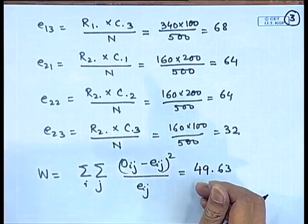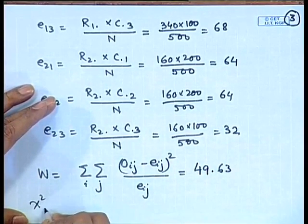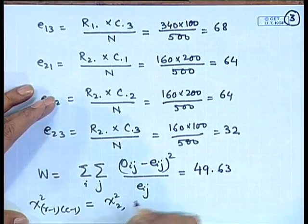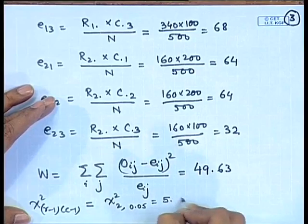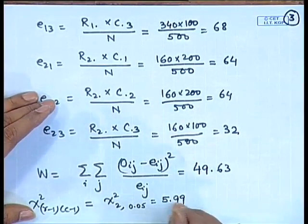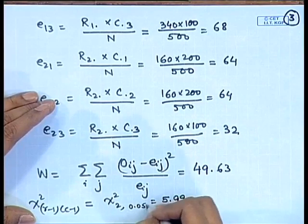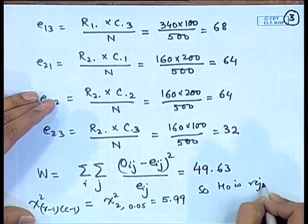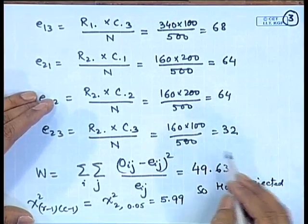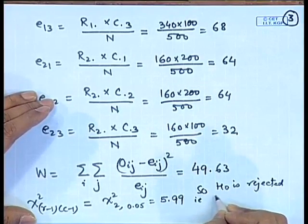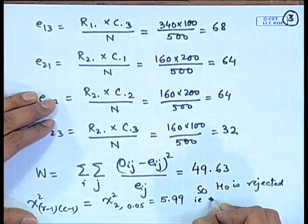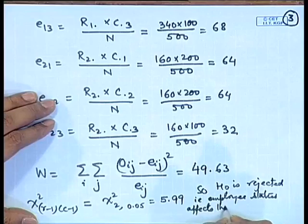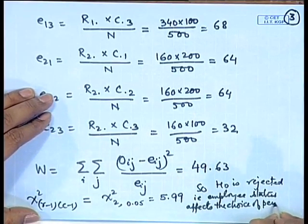The calculated chi-square statistic is on (r−1)(c−1) degrees of freedom. Here there are 2 rows and 3 columns, so this becomes chi-square with 2 degrees of freedom. At the 0.05 level, the critical value is 5.99, which is much smaller than 49.63. We can calculate at a very small level of significance and this value will still be larger. So H₀ is rejected. H₀ is the hypothesis that the row categories and column categories are independent. Rejecting H₀ means the employee status affects the choice of pension plan.